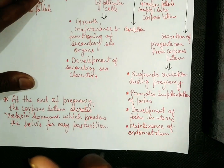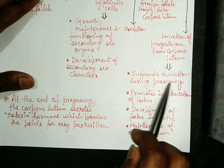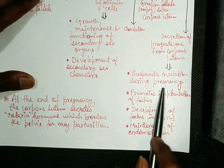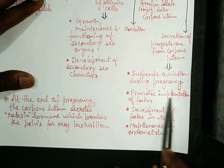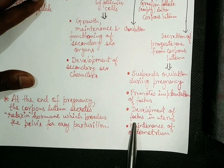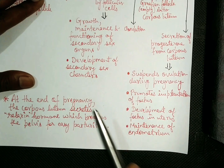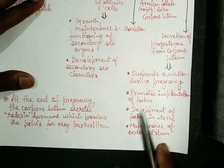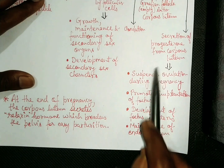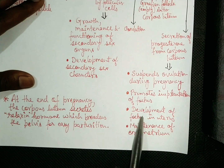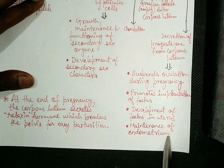Progesterone suspends ovulation during pregnancy — no ovulation occurs during pregnancy. It promotes implantation of the fetus, and is also responsible for maintenance of the endometrium lining. Progesterone is also responsible for the development of the fetus in the uterus.